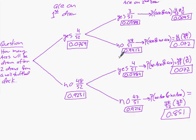I've put in the relative frequencies in decimal form of all the intermediate numbers. Every branch has to add up to 100% — the two first-draw branches add up to one, each set of second-draw conditional branches adds up to 100%, and all four final path probabilities also add up to 100%.